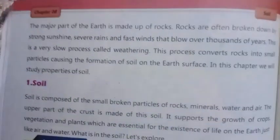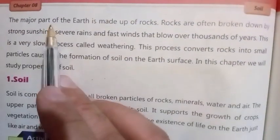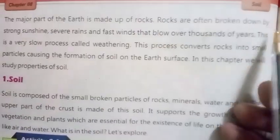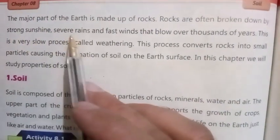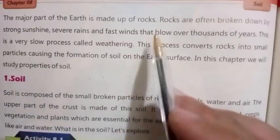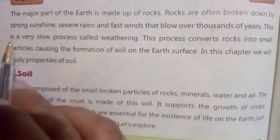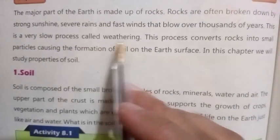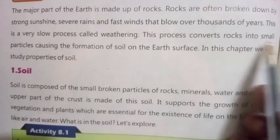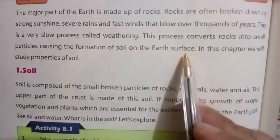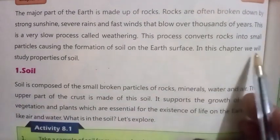Bismillahirrahmanirrahim. Chapter number eight: Soil. The major part of the earth is made up of rocks. Rocks are often broken down by strong sunshine, sour rains, and fast winds over thousands of years. This is a very slow process called weathering. This process converts rock into small particles, causing the formation of soil on the earth's surface. In this chapter we will study properties of soil.